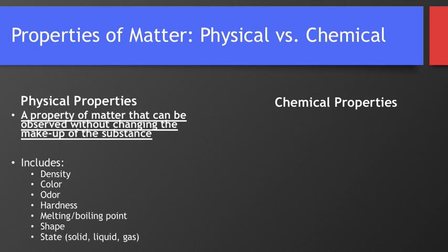Physical properties include things like density, color, odor, hardness, like how hard a substance is, the melting and boiling point, shape, and state of matter, like if it's a solid, a liquid, or a gas. And the reason why state of matter is included is because if you think of an ice cube, it's all just water. When it's a solid form, it's an ice cube. If it melts, it's a liquid, but it's still water. If you boil it, it becomes steam. It's still water. It's still the same H2O particles. So that doesn't change what the actual particle is. It's just the same stuff over and over again.